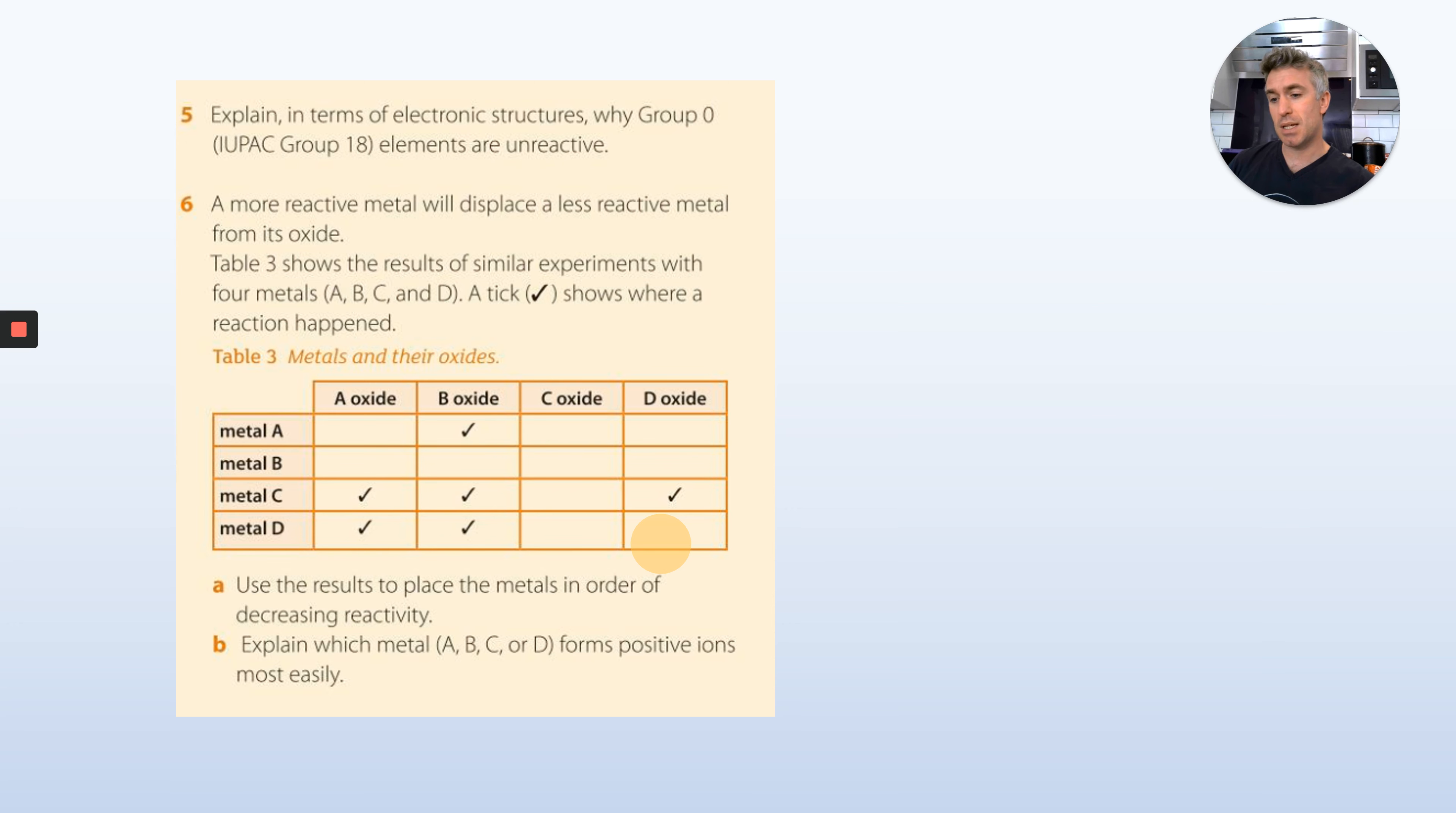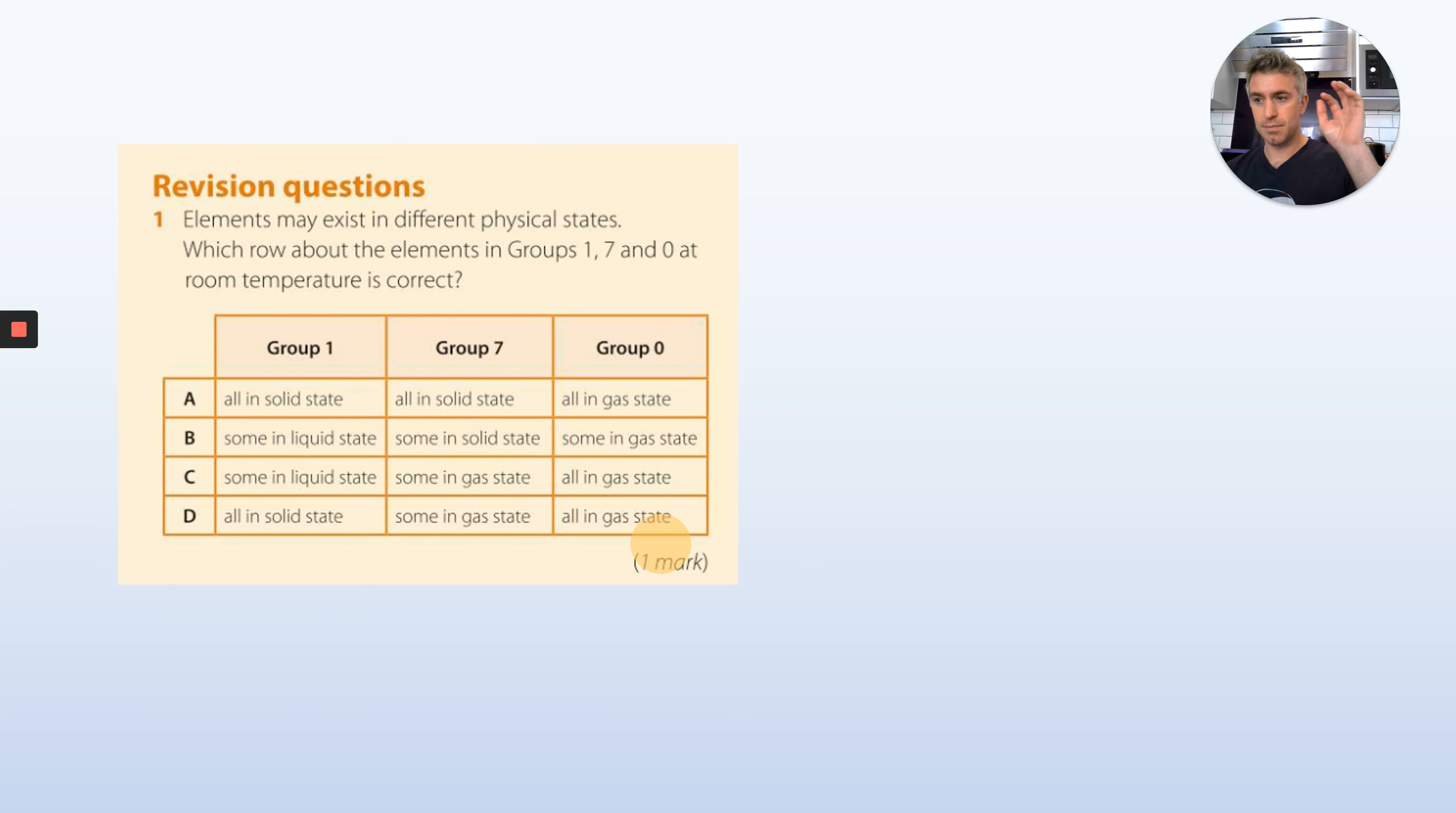And then explain which metal, A, B, C, or D, forms positive ions the most easily.